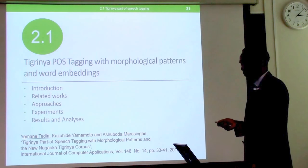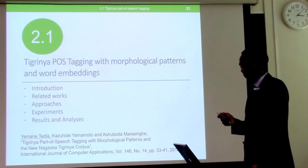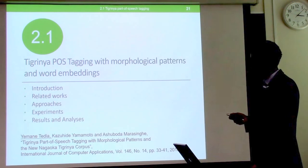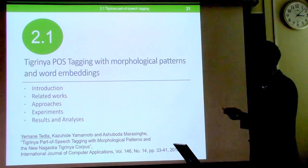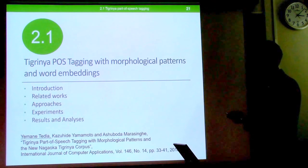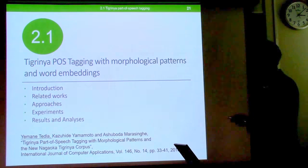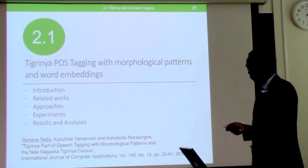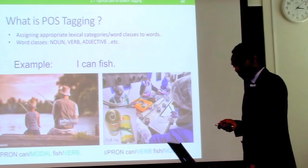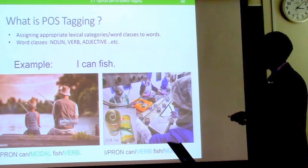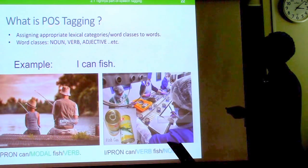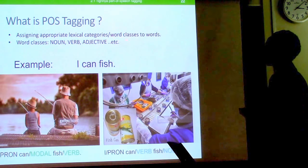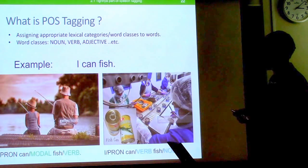Now I'll go into the details of each research. We start with Tigrinya part-of-speech tagging with morphological patterns and word embeddings. Part-of-speech tagging is the task of assigning lexical categories or word classes — such as nouns, verbs, and adjectives — to words.